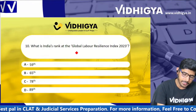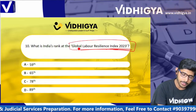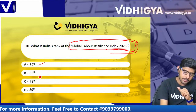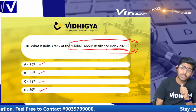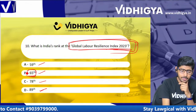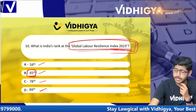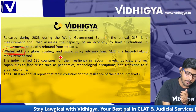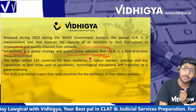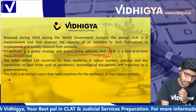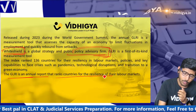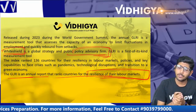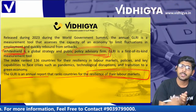What is India's rank in the Global Labour Resilience Index 2023? Options are: 59th, 65th, 78th, and 89th. The correct answer is 65th — India's rank is 65th in the Global Labour Resilience Index 2023. This index is conducted by Whiteshield, a policy advisory firm. It is an annual report that ranks countries for the resilience of their labour markets.